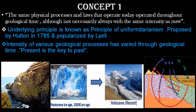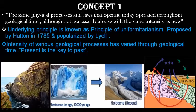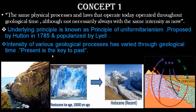The meaning of uniformitarianism is that it was uniform — what is now was before. That is why Hutton said that 'the present is the key to the past.' If we see the present, we can have an idea of what was in the past because principally, through uniformitarianism, it was the same.